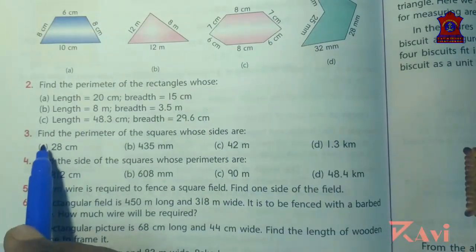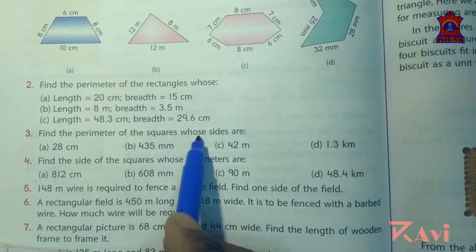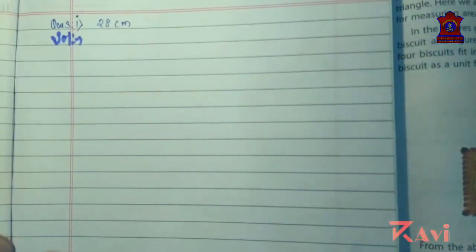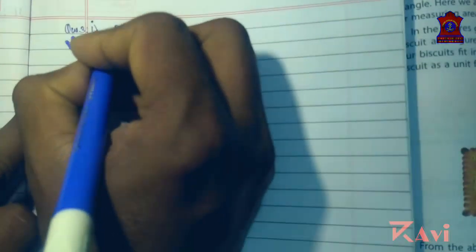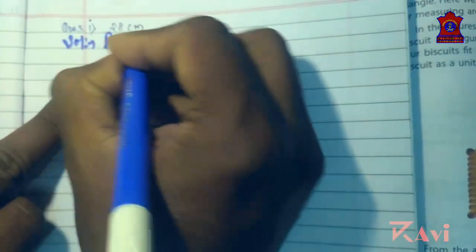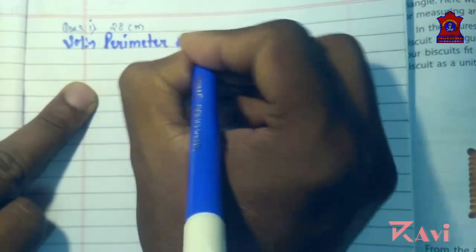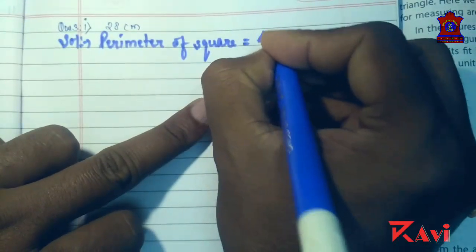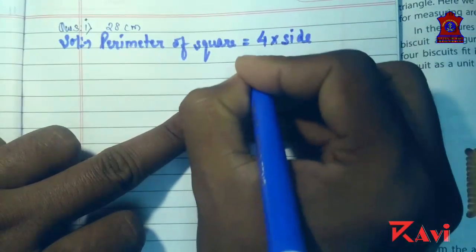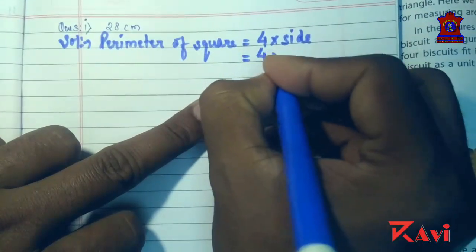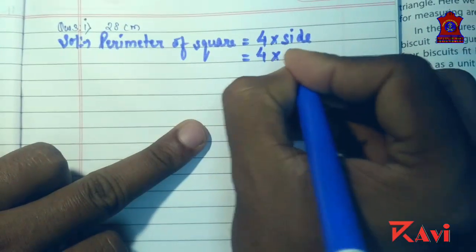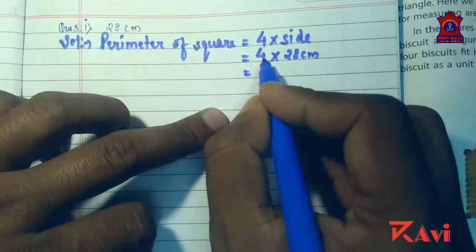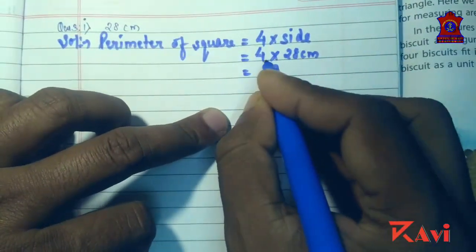Now question number 3: find the perimeter of squares whose side is given. For question 3A, the side is 28 centimeters. Use the formula: perimeter of square equals 4 into side, so write 4 into 28.